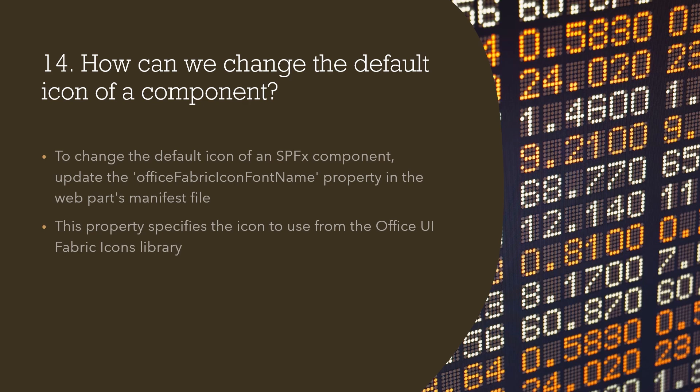Question number fourteen: how can we change the default icon of a component? Every SPFX web part has a default icon. To change it, we update the officeFabricIconFontName property inside the manifest file. This property specifies the icon to use from the Office UI Fabric icons library.